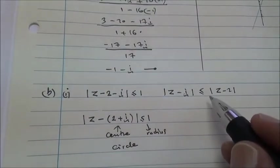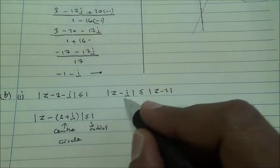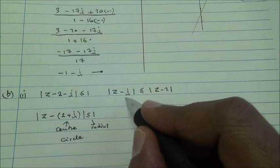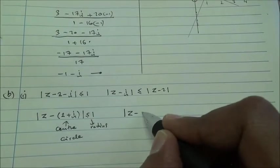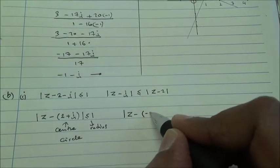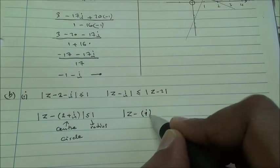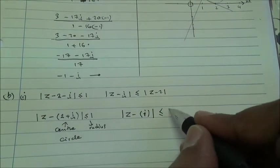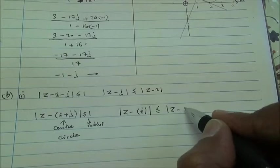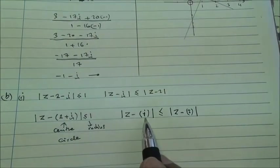Then, for the second part, we can say z minus i, the mod of z minus i less or equal to mod of z minus 2 in brackets. It looks like these are two points.